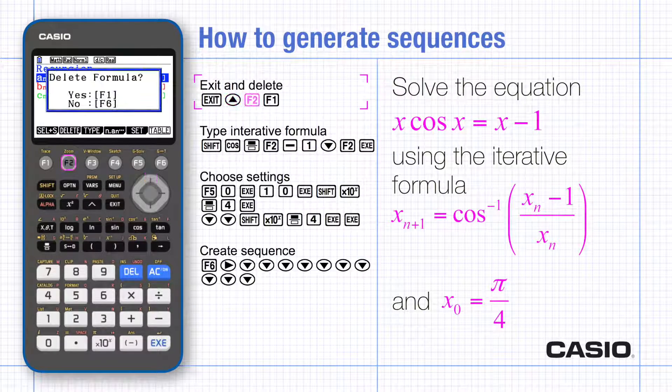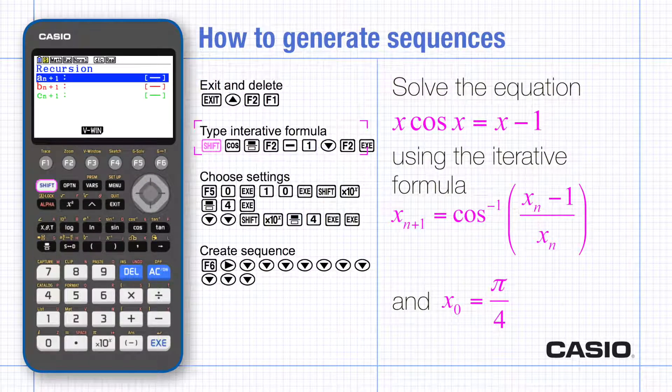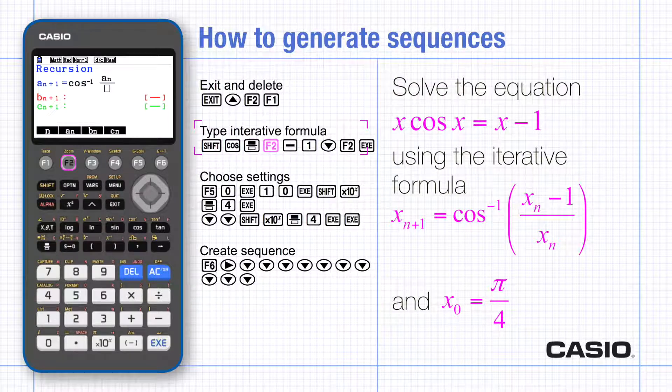Exit and scroll up to delete the existing formula. Type the iterative formula using An for the variable xn.